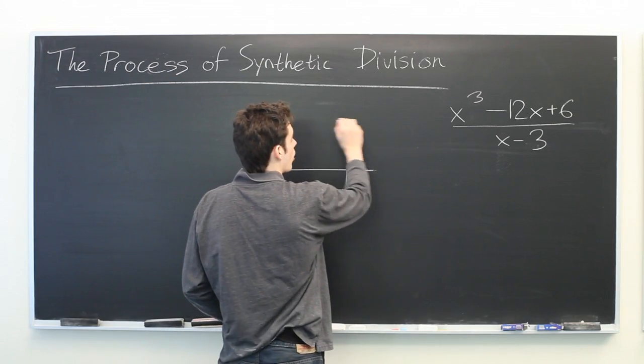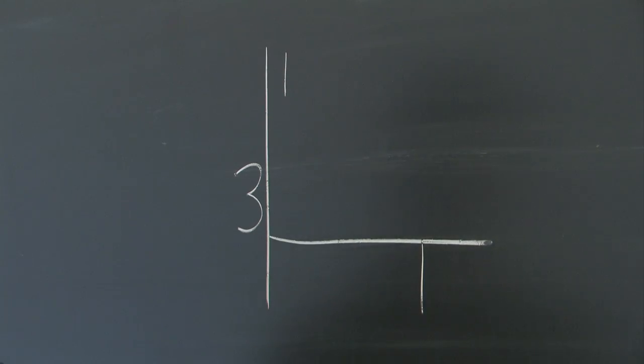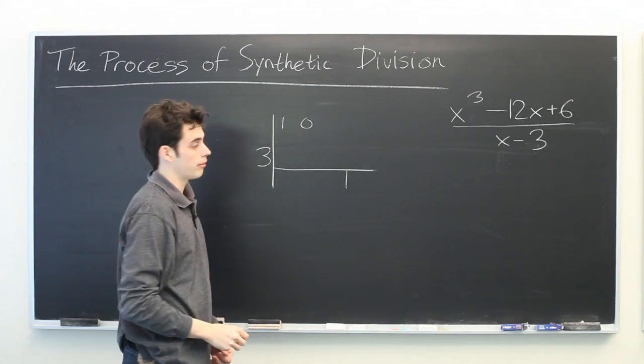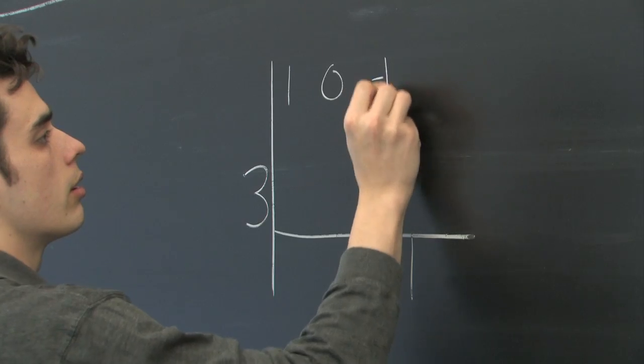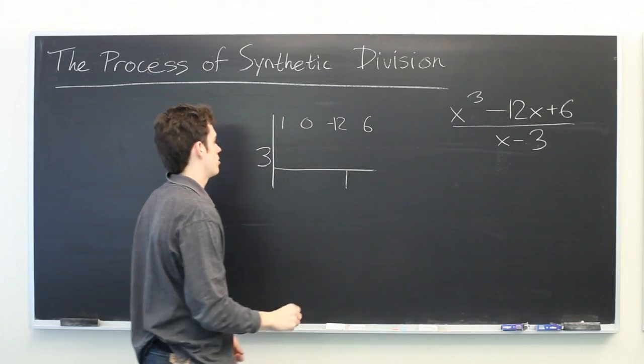Then we're going to write our coefficients along the top. 1 is the coefficient of x cubed, 0 is the coefficient of x squared, minus 12 is the coefficient of x, and 6 is our constant.